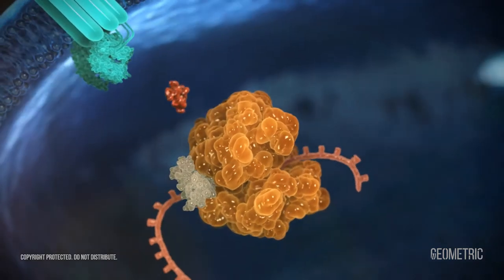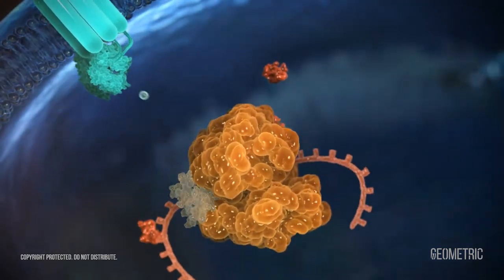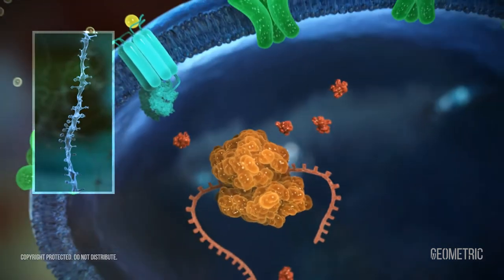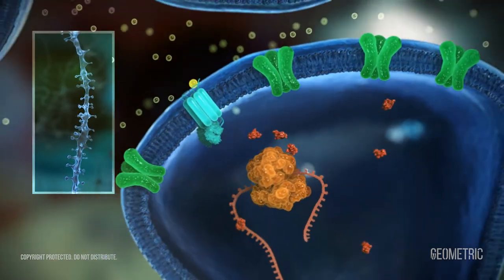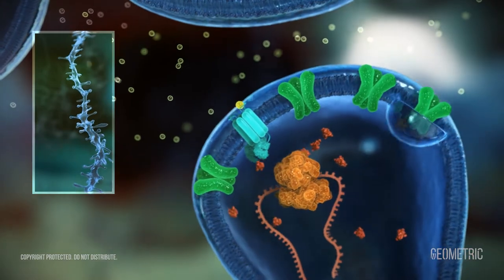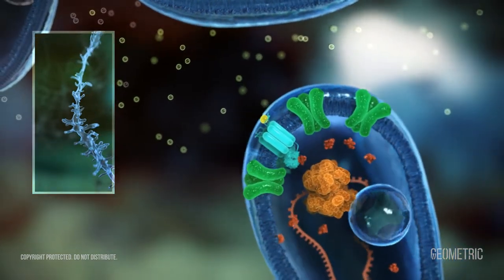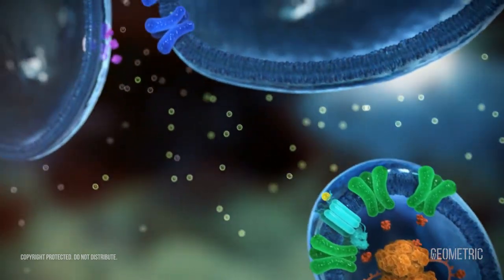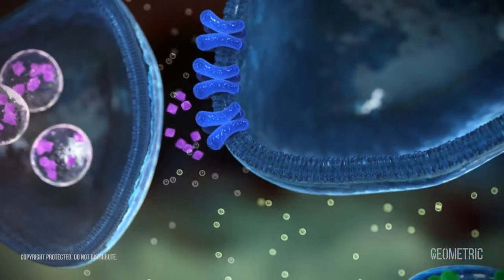Mice genetically modified to lack the FMR1 gene and thus also FMRP have characteristics related to Fragile X syndrome, including changes in the density and shape of dendritic spines and decreased numbers of AMPA and NMDA receptors. They also have deficiencies in GABA neurotransmission.